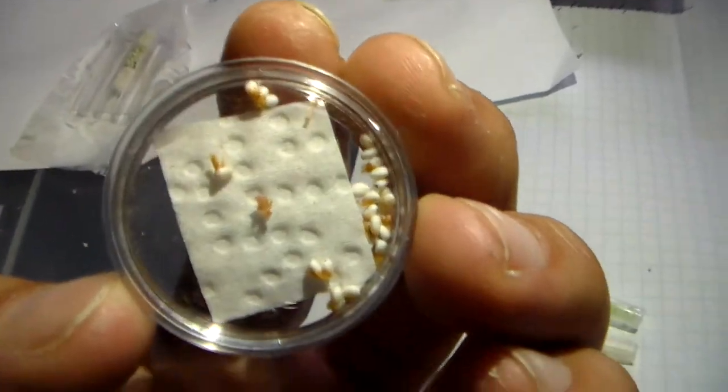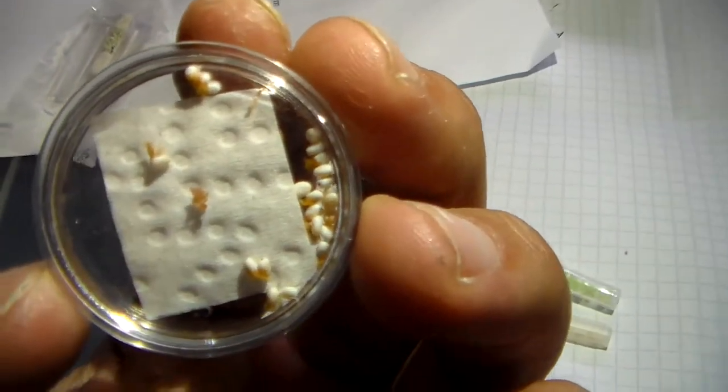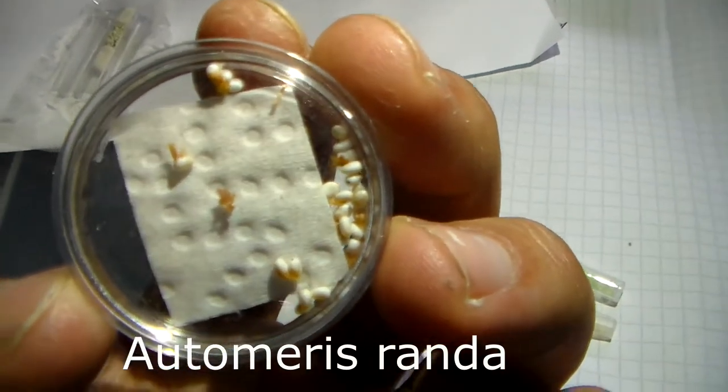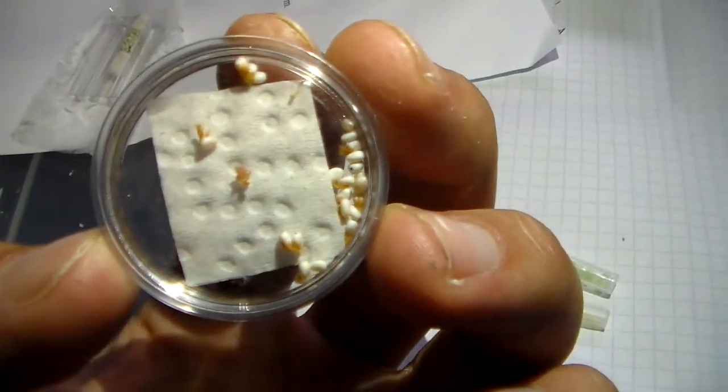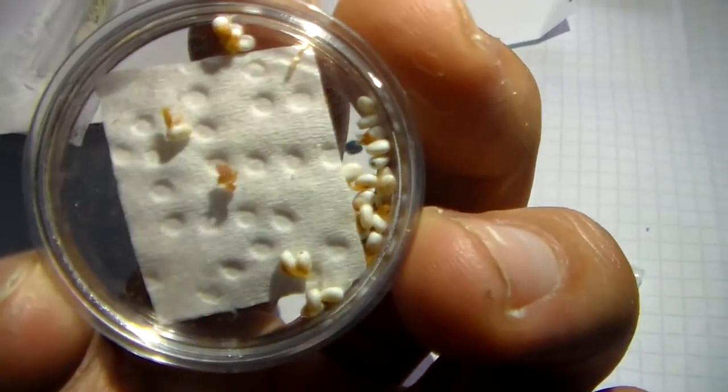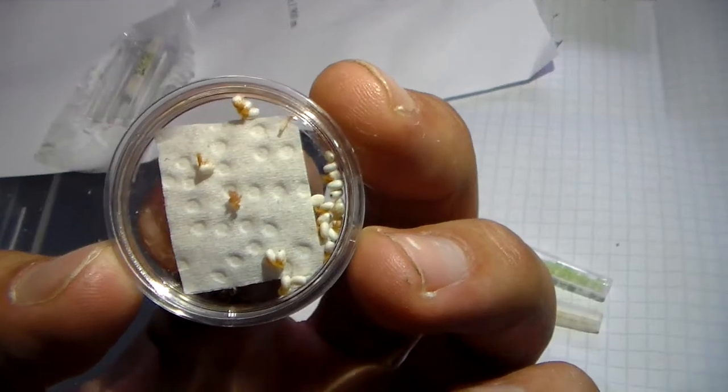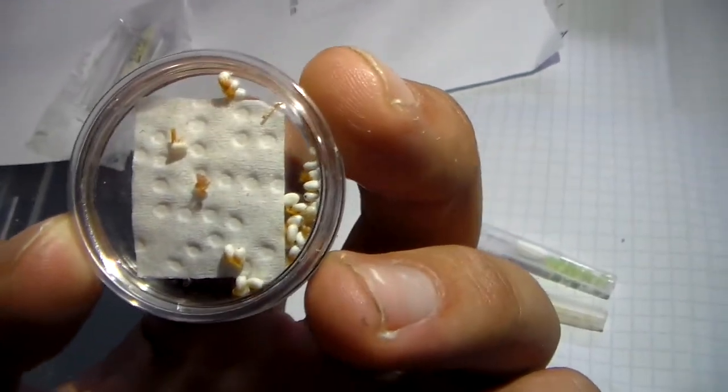Then we have another batch of eggs, also Automerus. These are the eggs of Automerus randa, a more common species. Some of my viewers may have bred Automerus randa before. It's a rather large species with a wingspan up to 10 cm, which is not bad for Automerus. I'm going to enjoy breeding this one.